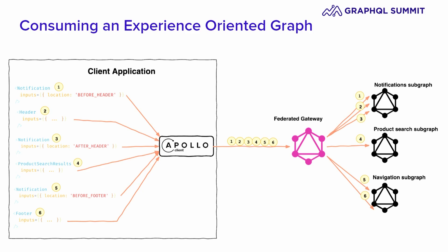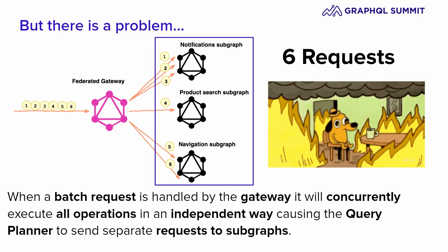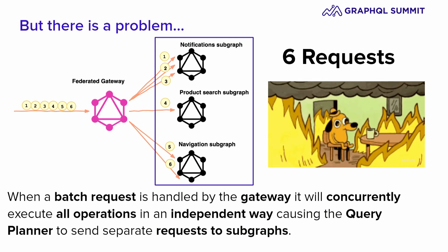The federated gateway traces and creates query plans for each operation in the batch. But there is a problem: when a batch request is handled by the gateway, the gateway will concurrently execute all operations independently, causing the query planner to send separate requests to subgraphs. So for one single batch request from the client to the gateway, the gateway is sending six requests to subgraphs. It's not only about performance — we also lose the capability of using data loaders for batching deduplication on subgraphs when communicating with downstream. So we needed to fix that.